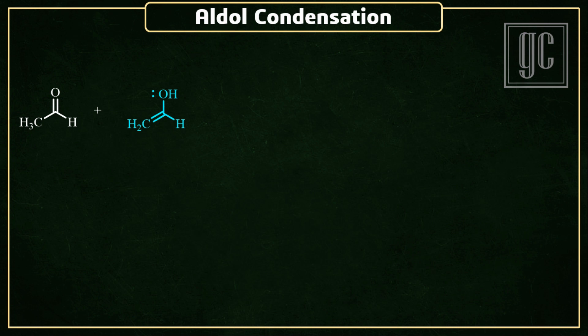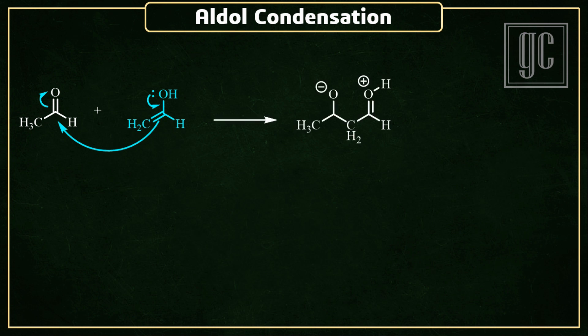The next step is the attack of enolate on the other carbonyl molecule. In the enolate, the lone pair of the oxygen comes down; as a result, the pi electrons of the carbon-carbon double bond attack on the electrophilic position, that is the carbonyl carbon atom. As a result, the double bond of the carbonyl moves to the oxygen atom, a negative charge is generated, and a carbon-carbon single bond is formed. Now a proton migration takes place from the protonated carbonyl to the negatively charged oxygen and the charge on the molecule is neutralized.